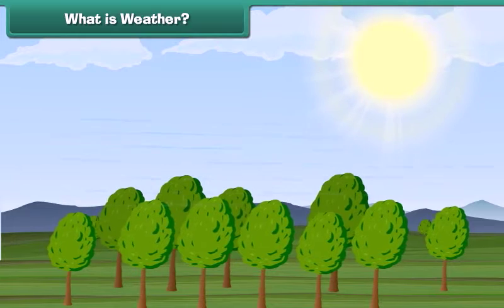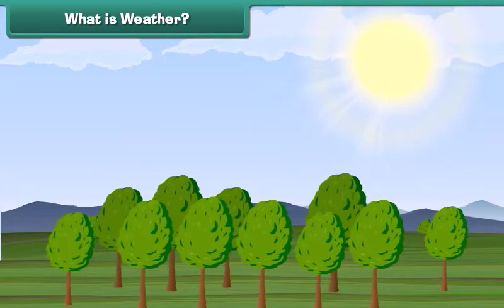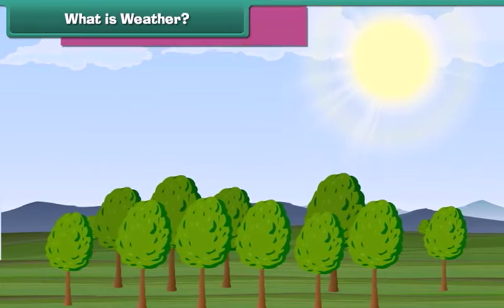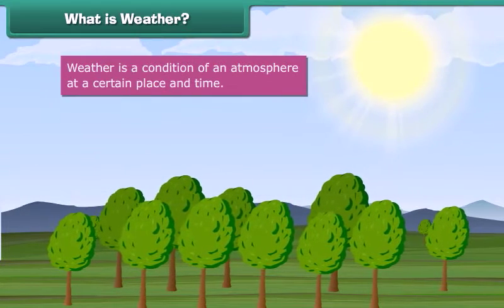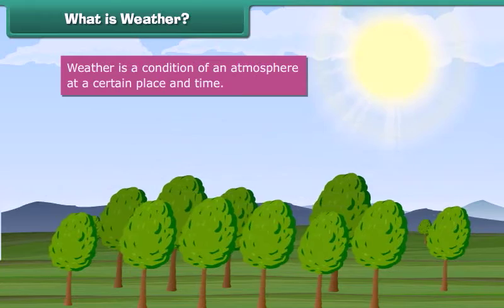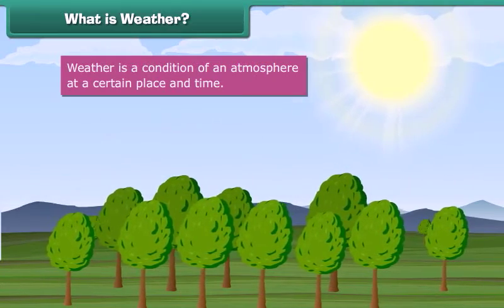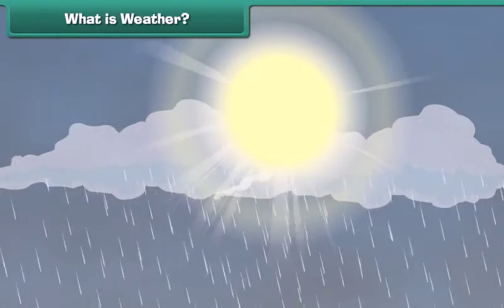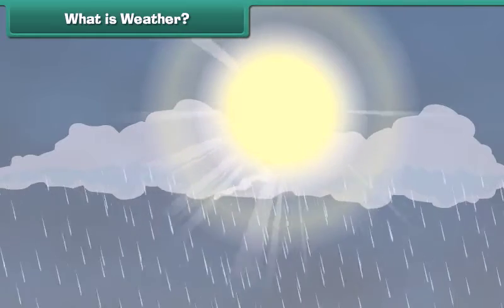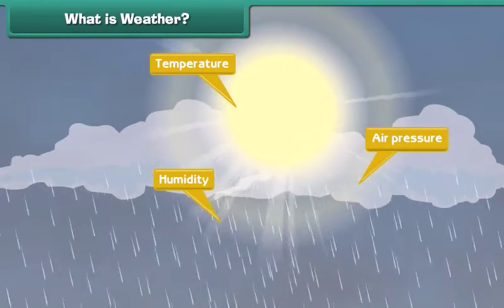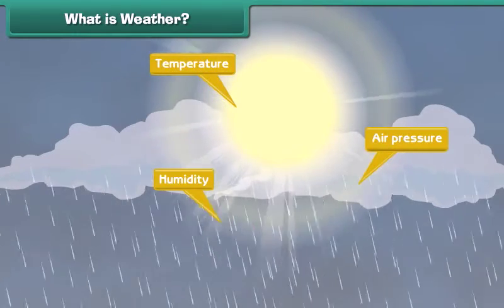Did you check today's weather forecast? What is this weather? Weather is a condition of an atmosphere at a certain place and time. The weather depends on many factors such as temperature, humidity and air pressure. Let us learn about these factors.